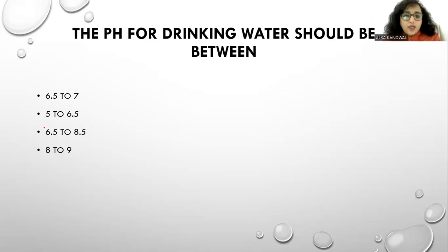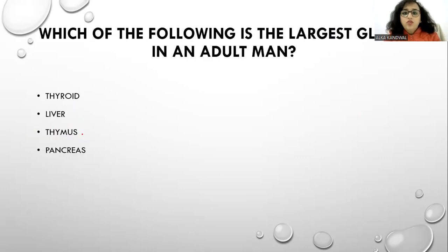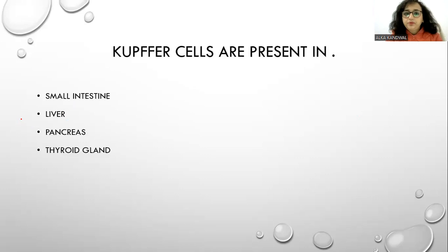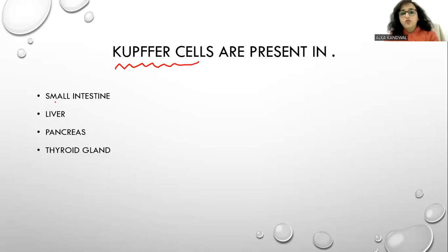The pH of drinking water should be 6.5 to 8.5. Which is the largest gland in an adult human? It is the liver — the liver is the largest gland. Kupffer cells are present in the liver — they are present in the liver.